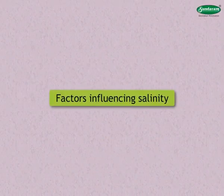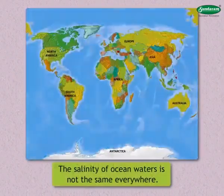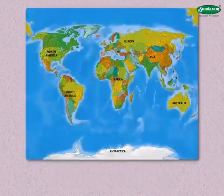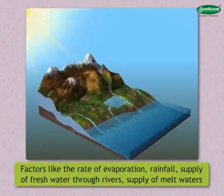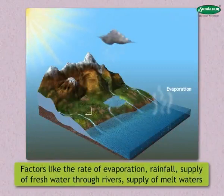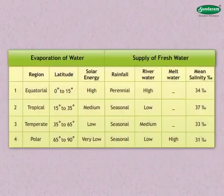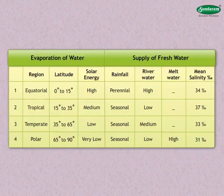The salinity of ocean water is not the same everywhere; it varies from place to place. Factors like the rate of evaporation, rainfall, supply of fresh water through rivers, and supply of melt waters influence the salinity of ocean water. Moreover, the supply of fresh water is quite limited. Find how solar energy that causes evaporation and the supply of water influence the salinity of ocean water from this table.